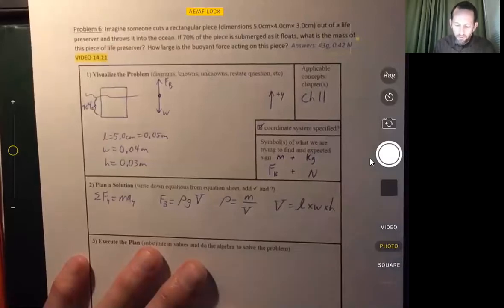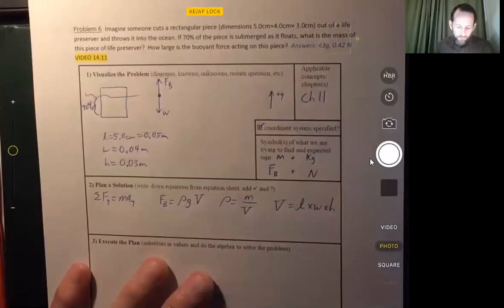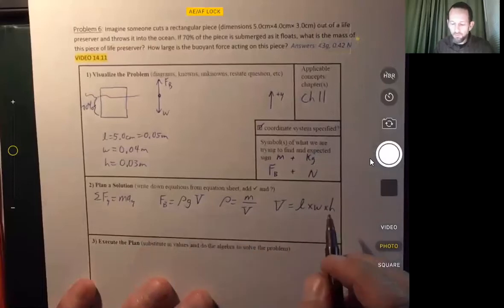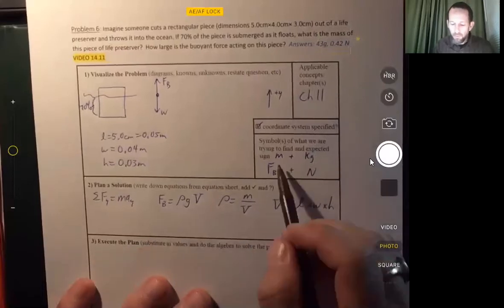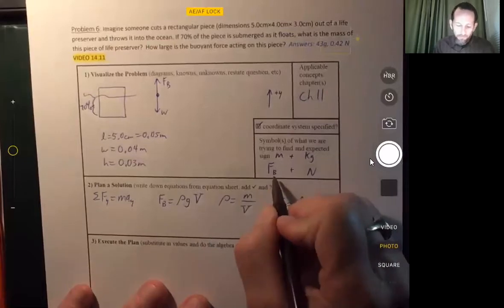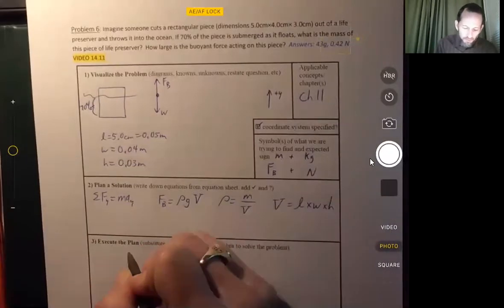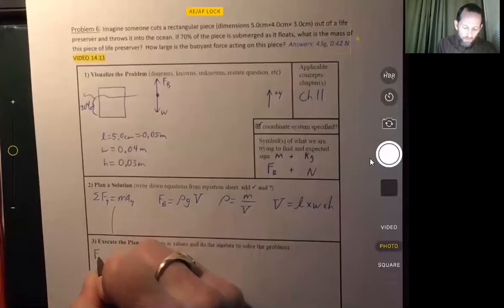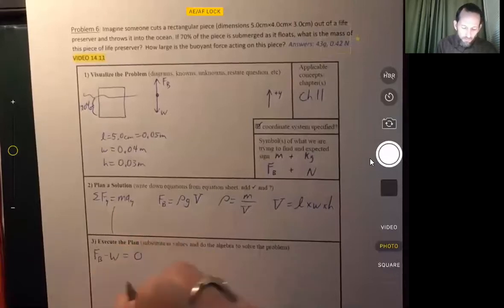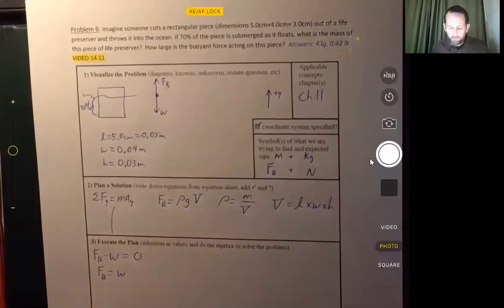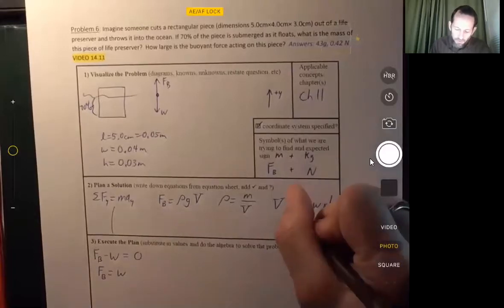All right. Well, let's see what we can do about figuring this out. I've written down some of the usual equations that we've been using in this unit. We know we're going to be looking for the mass, and we're also going to be looking for the buoyant force. Let's go ahead and see what we can do with these equations. We can sum the forces. Buoyant force minus the weight is equal to 0. So the buoyant force is equal to the weight of the object. So we know that much. We also know the volume equation here.